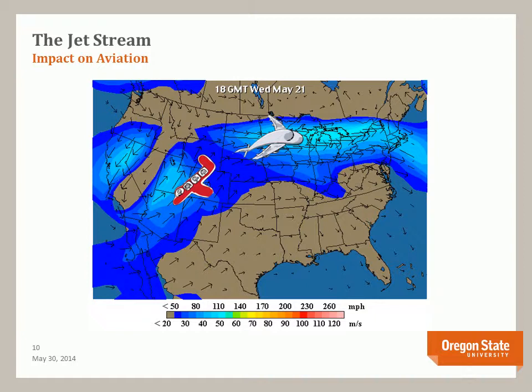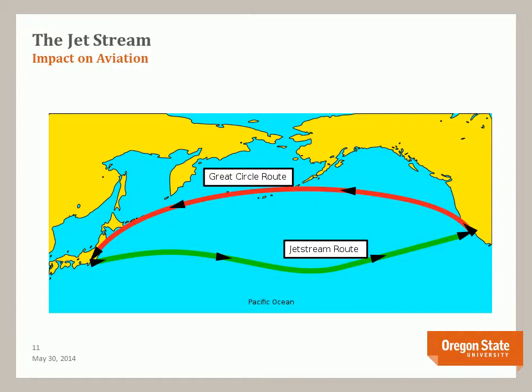Of course, this can also result in a bumpy ride associated with turbulence in and around the jet stream. Heading west, pilots try to avoid the high winds of the jet stream as they slow travel and increase fuel use. For west travel across the Pacific, planes take the Great Circle route, which is a shorter distance between two cities, although on this slide it looks longer. However, due to the jet stream, the return flight is usually quicker when following the jet stream.